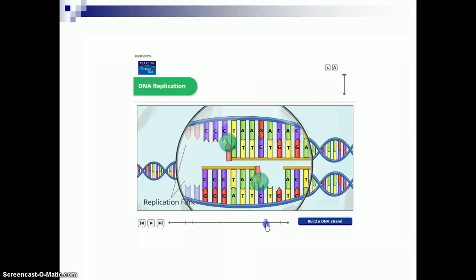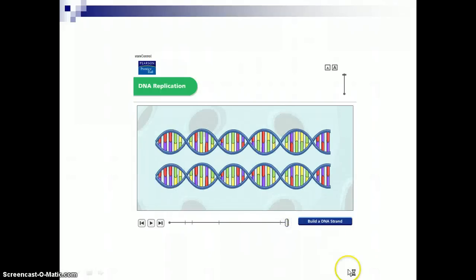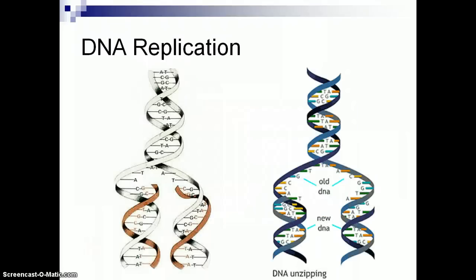So again, it follows the base pairing rule. Watch it slowly, right? Wherever there's a C, there's a G, and A's with T's, so that we get two pieces of DNA. So this is just another picture of what semi-conservative means. You start with one old piece. And then when it splits in two, you end up with this piece is still old, but this piece is now new, so it's semi-conserved.